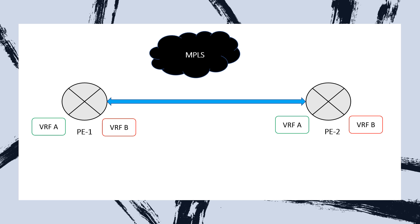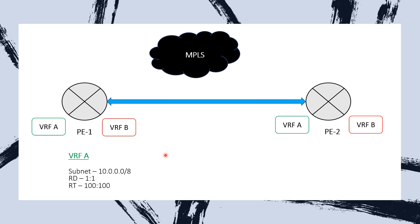Let's look at an example that helps understand the difference much better. In this MPLS domain, we have two PE routers — P1 and P2 — and on both routers we have two different VRFs: VRF A and VRF B. VRF A is for Customer 1 and VRF B for Customer 2. Both customers want to use the same subnet — 10.0.0.0/8 — for their LANs. Since private addressing is common in MPLS VPNs, subnets can overlap. So we append an RD value to the subnet, making it a unique VPNv4 address that floats in the MPLS domain.